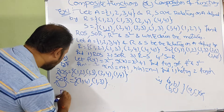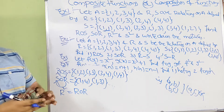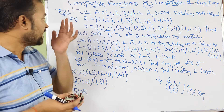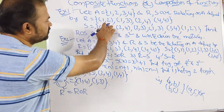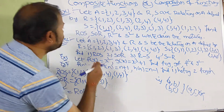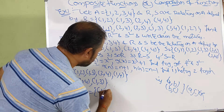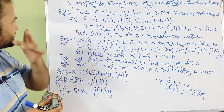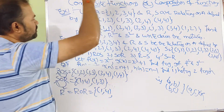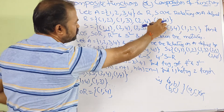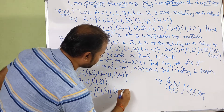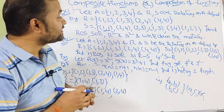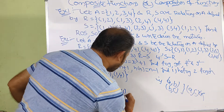Likewise compute R². R² can be written as R∘R. Take (1,2) from R; select a pair from R beginning with 2 — that is (2,4) — giving (1,4). Next (1,3): no pair begins with 3. Next (2,4) combined with (4,4) gives (2,4). And (4,4) combined with (4,4) gives (4,4).